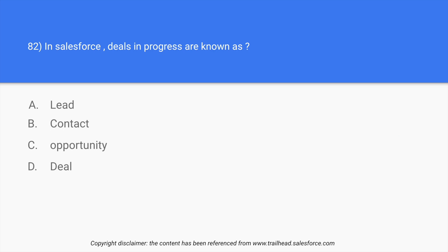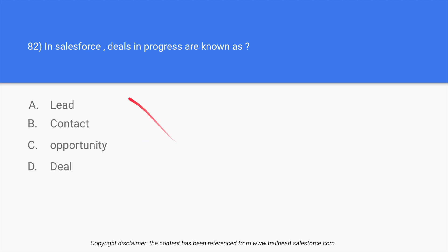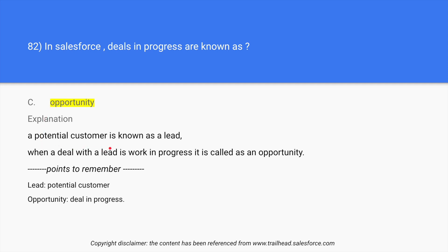Question 82: In Salesforce, deals in progress are known as what — lead, contact, or opportunity? They are not called leads or contacts; they are known as opportunities. A potential customer is known as a lead, and when a deal with a lead is work in progress, it is called an opportunity. So whenever you see the word 'lead' it means potential customer, and whenever you see 'opportunity' it means a deal in progress.